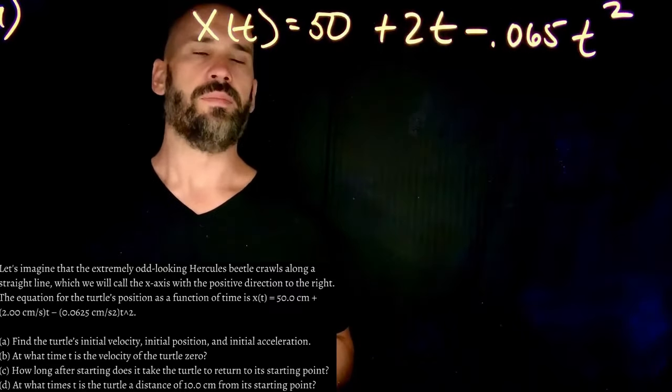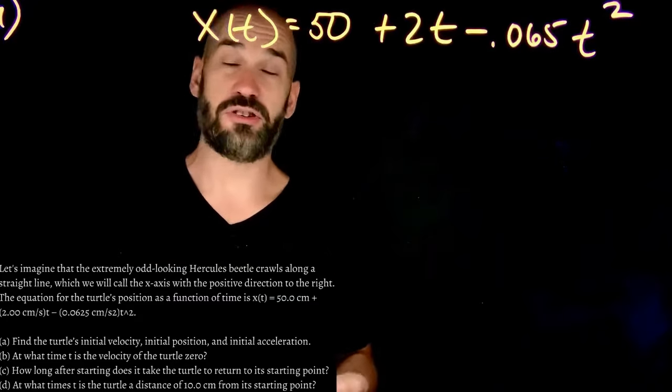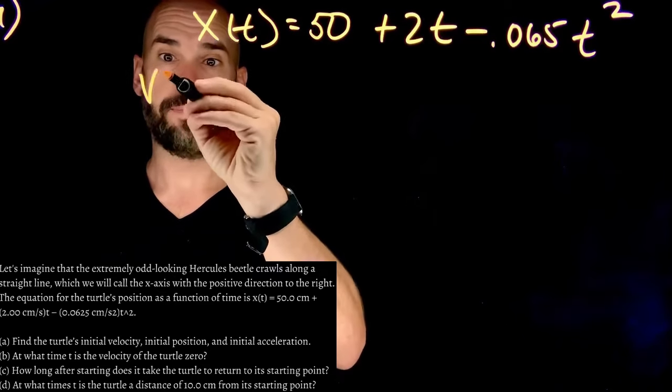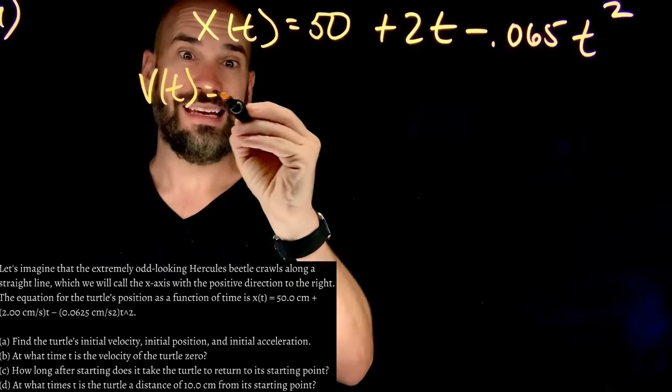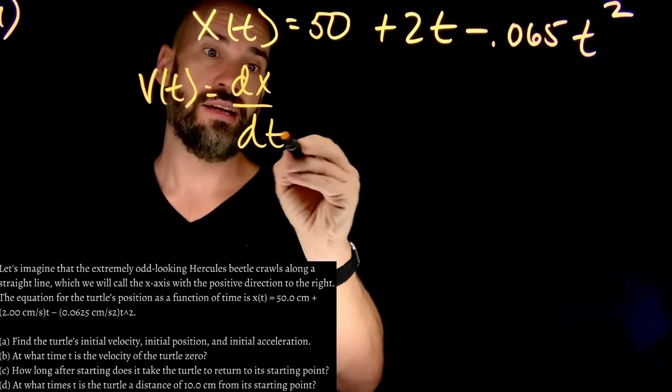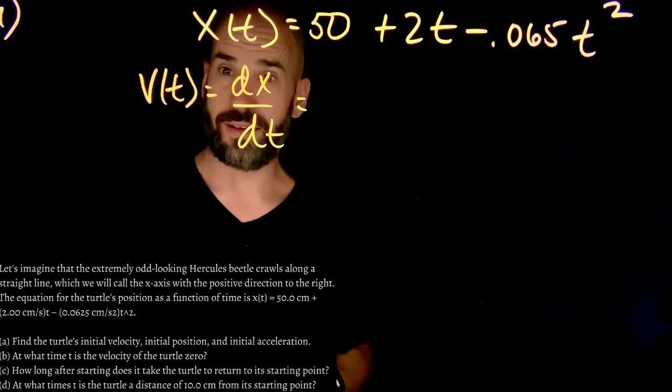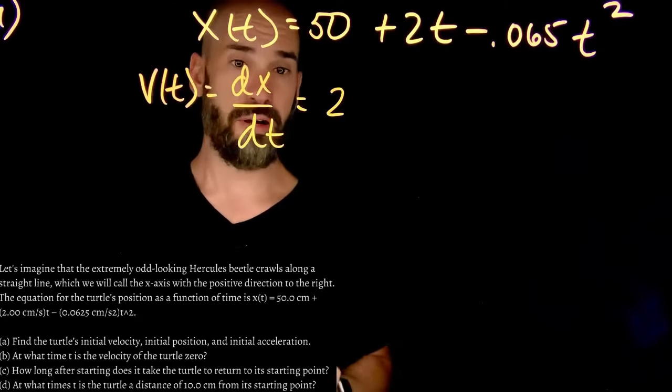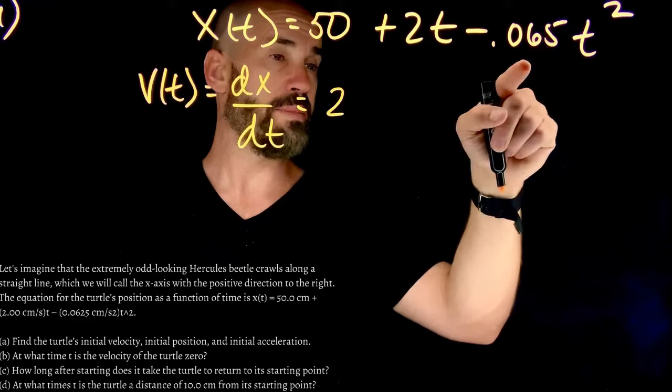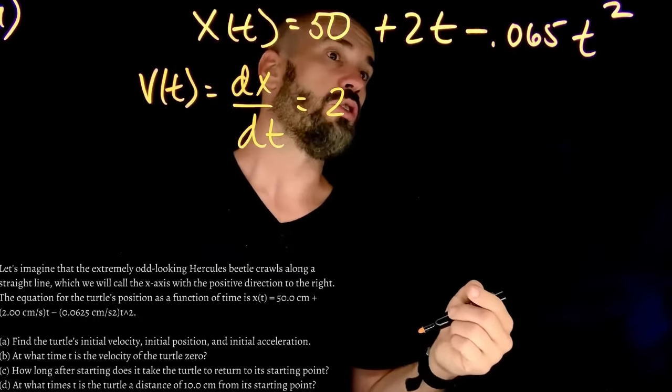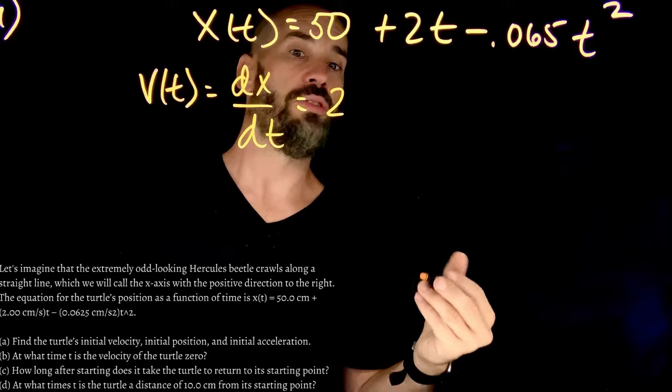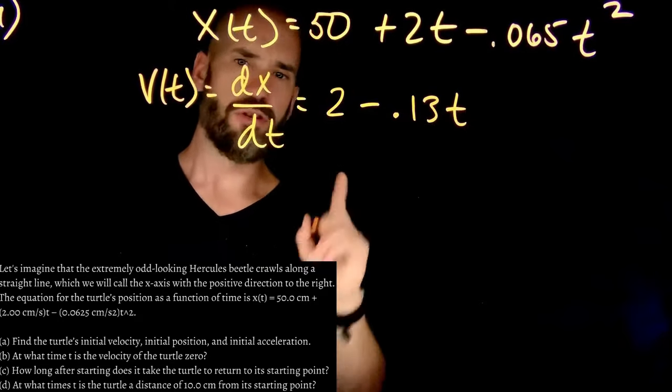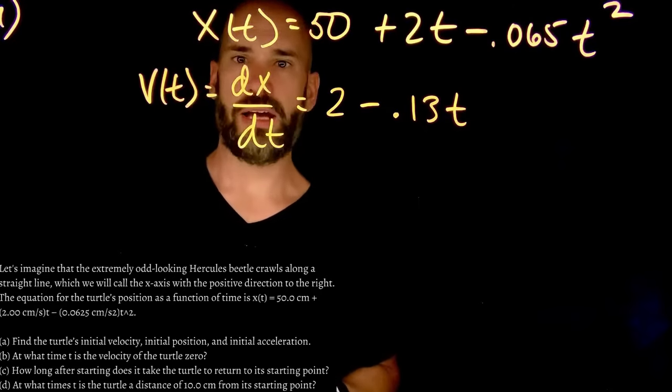So if we're going to have to do velocity and acceleration, we might as well go ahead and take our derivatives right now. So remember, v of t is just going to be dx/dt. So if we take the derivative of this with respect to time, that becomes zero, gone. This becomes just two. And this will become two times this guy, which according to me should be 0.13. So this would be minus 0.13t. You can check me on that if I'm doing my mental math wrong.